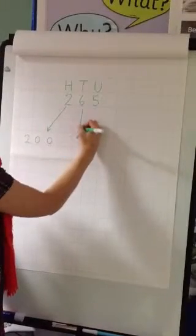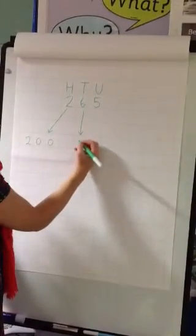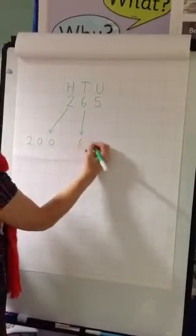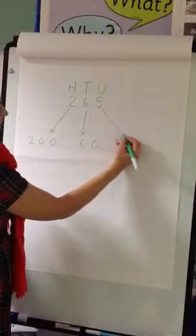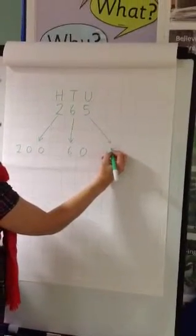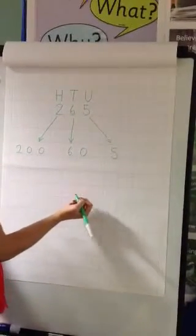The 6 here is the same value as 6 tens, which is the same as 60. And the 5 is the same value as 5 units, or 5 ones.